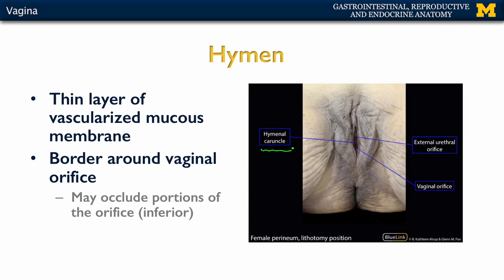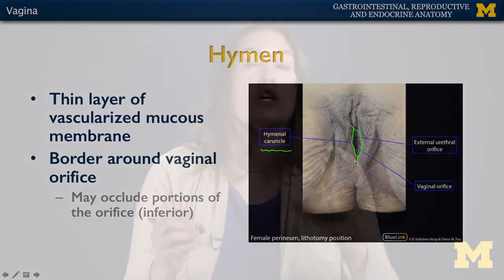The hymen typically ruptures during first sexual intercourse or other activities before that, though not necessarily. What's often left after rupturing is referred to as the caruncle — a remnant surrounding the vaginal orifice. We're now looking at the vestibule in this region, and we'll continue the discussion of external genitalia in the following presentation.